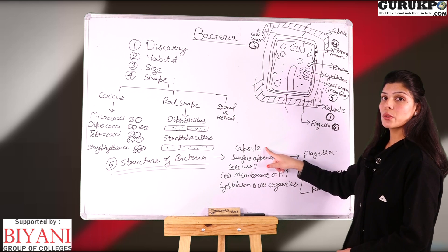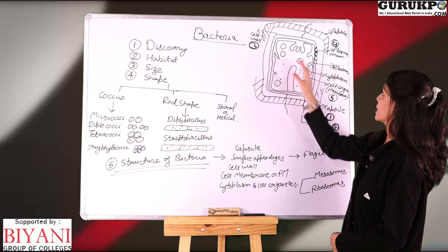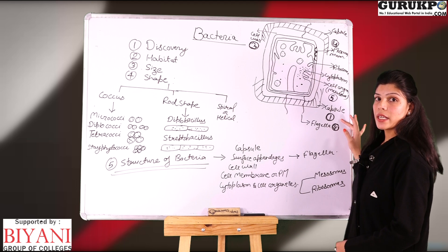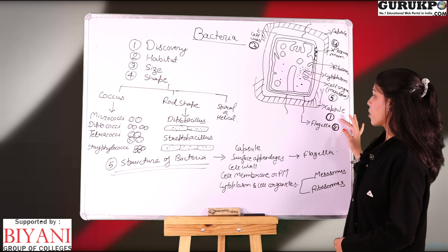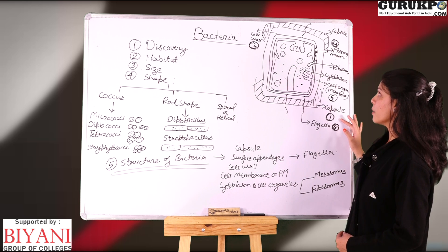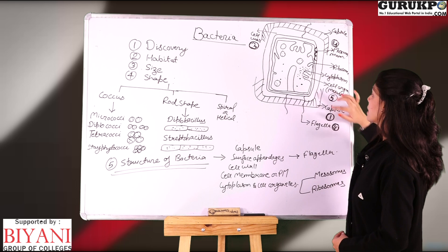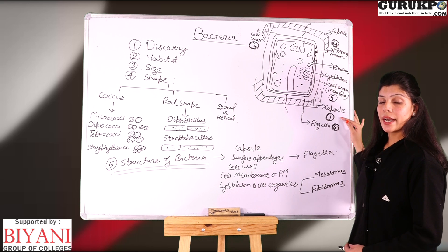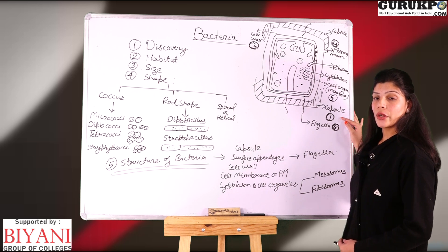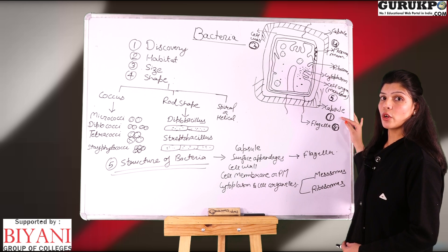The first layer is the capsule or slime layer. This layer is present just outside the cell wall. If this layer is made up of nitrogenous substances then it is called a capsule, and if it is made up of polysaccharides then it is called a slime layer. It is a water-rich mucilaginous covering. The function of the capsule is that during unfavorable conditions it provides nutrition to the bacterial cell, and due to the presence of water it protects the cell from drying.